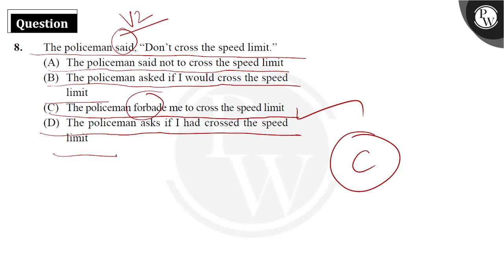And we have considered that he said to me because there is no listener mentioned here. That means we take it on the presumption that we have talked about. So, 'forbade me to cross the speed limit.' That is the meaning.